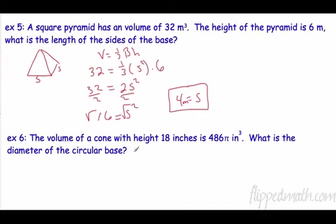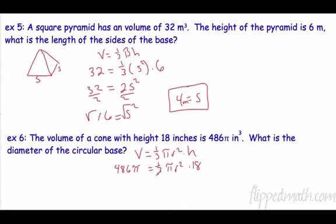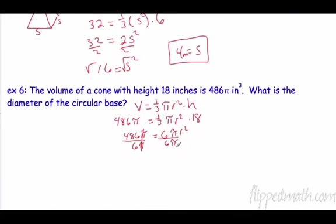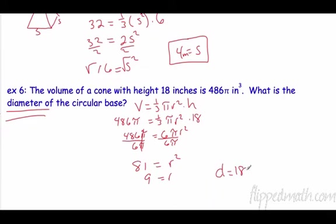The volume of a cone is one-third pi r squared times h. The volume of the cone is 486 pi, and the height is 18. One-third times 18 is 6, so 486 pi equals 6 pi r squared. Divide both sides by 6 pi — the pi's cancel — and 486 divided by 6 is 81, so r squared equals 81 and the radius is 9. The diameter is 2r, so the diameter equals 18 inches.